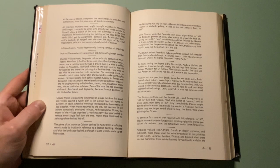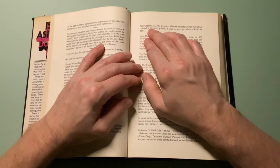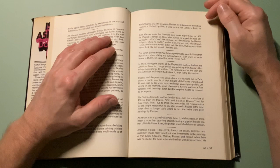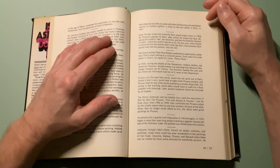Paul Cezanne was 56 years old when his first one-man exhibition opened in Vollard's Gallery, a shop on rue Laffitte in Paris in 1895.